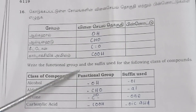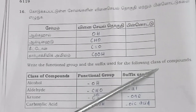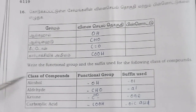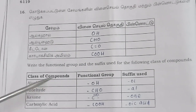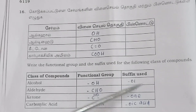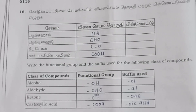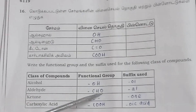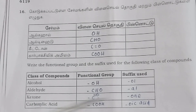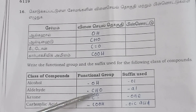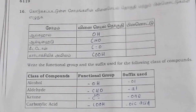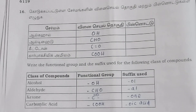Question 16: Write the functional group and suffix for the following classes of compounds. Alcohol: functional group –OH, suffix -ol. Aldehyde: functional group –CHO, suffix -al. Ketone: functional group C=O, suffix -one. Carboxylic acid: functional group –COOH, suffix -oic acid.